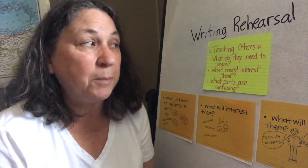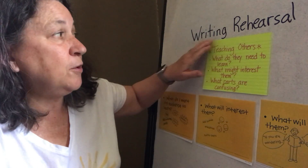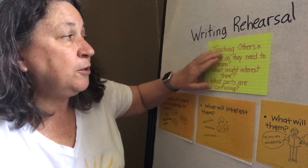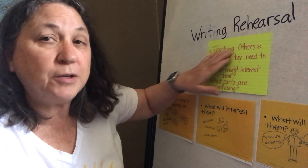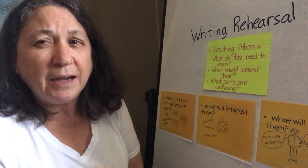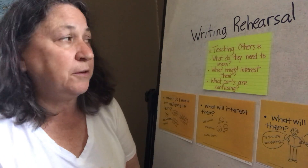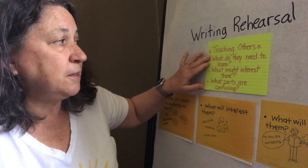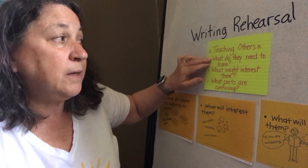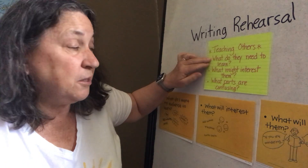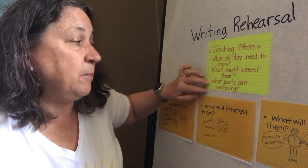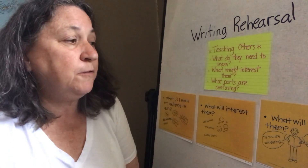So here are some things to think about. If you're going to have a rehearsal for your writing, you're thinking about how you're going to teach somebody. There are three things to consider: What do the others need to learn? What might interest them? And what parts are confusing?